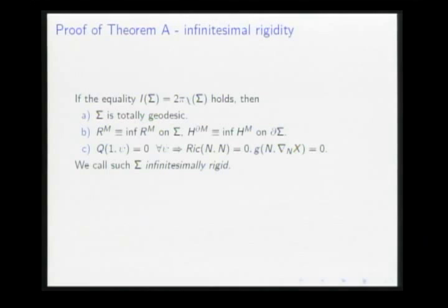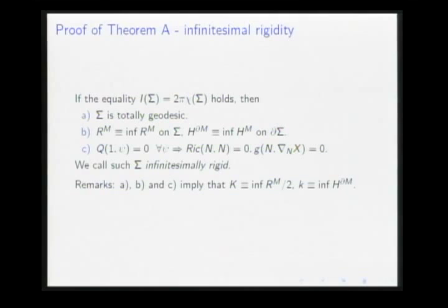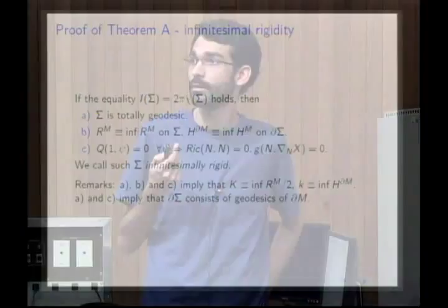Some remarks: an infinitesimally rigid surface must have constant Gaussian curvature, and the boundary of sigma must consist of geodesics of the boundary of M. This shows that the hypothesis about the boundary of sigma being locally length-minimizing makes sense.